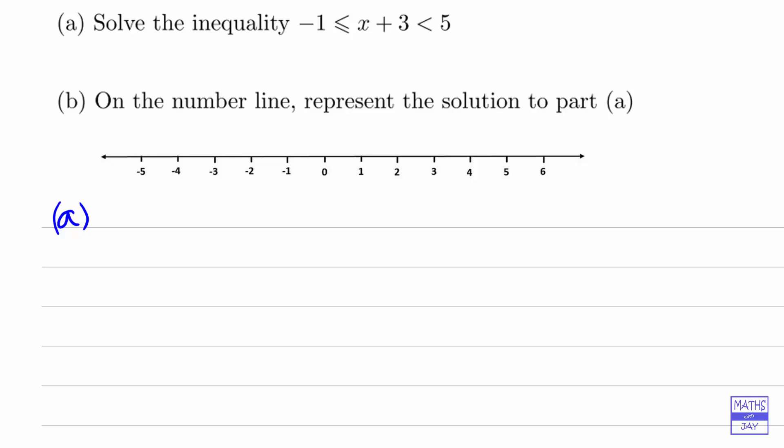Just as we would if we were solving an equation, if we had an equation x+3 equals something, we would want to get the x on its own, so we would subtract 3 from both sides. So here we subtract 3 from each part of the inequality.